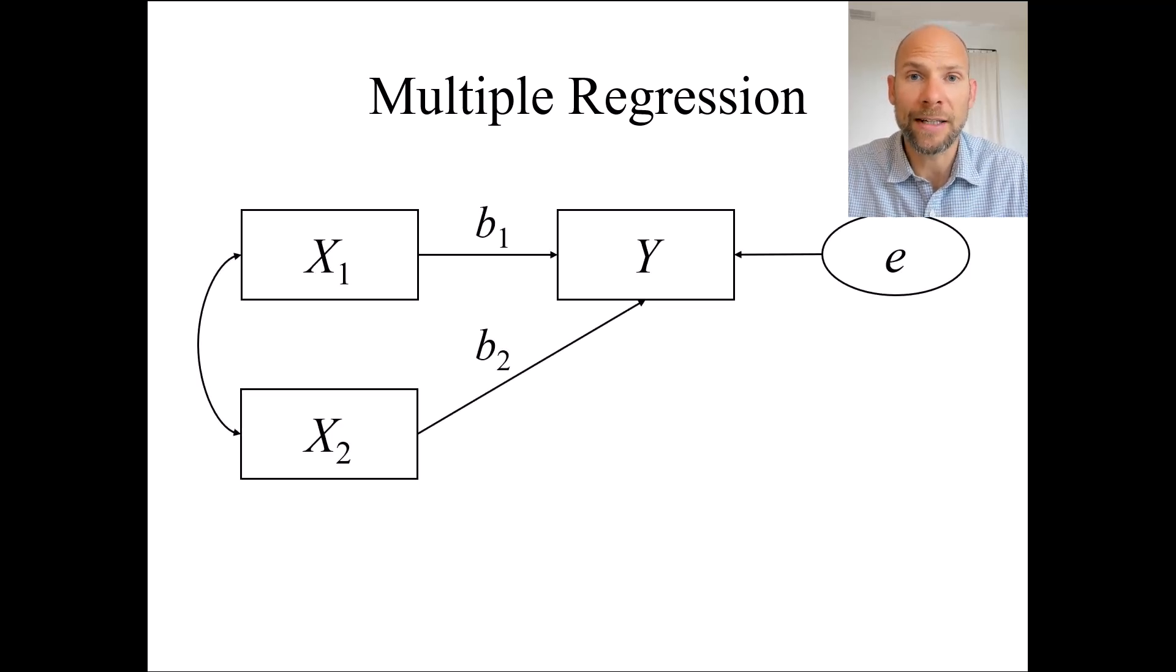In multiple regression analysis, we consider a single dependent variable or outcome variable here indicated as y. So this is our variable that we want to predict from other variables and in this case I have a multiple regression model with two predictor variables or independent variables x1 and x2. And so in this multiple regression model x1 and x2 serve to predict variance or to explain variance in the dependent variable y.